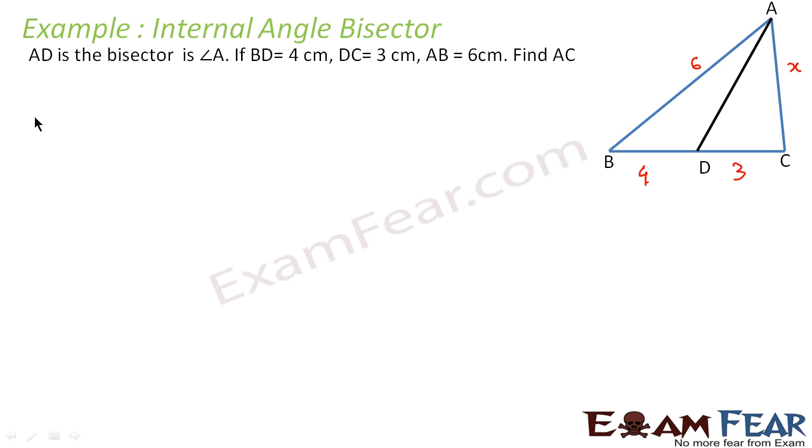Let this be X. So we know that 6 by X is equal to 4 by 3, using angle bisector theorem because this AD is the angle bisector of this angle. So we can say that AB by AC is equal to BD by CD. So 6 by X is equal to 4 by 3, or you can say X is equal to 6 by 3 by 4, that is 18 by 4, that is 4.5 cm. And that is my answer.